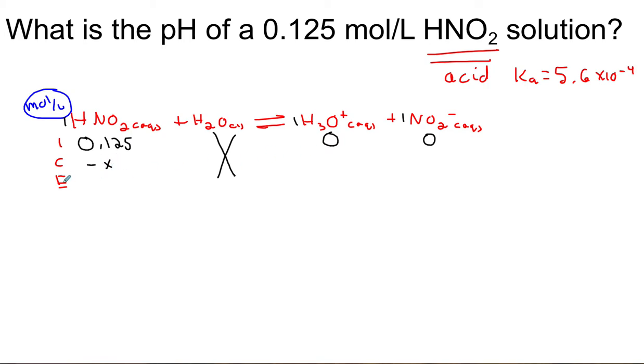Our reactant will go down. We will end up with 0.125 mol per liter minus our change. We will make X hydronium and we will make X nitrite.